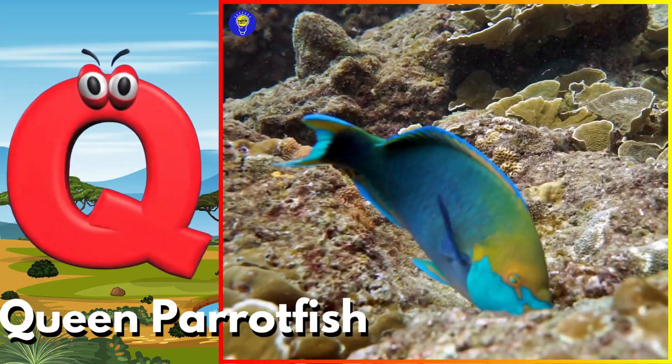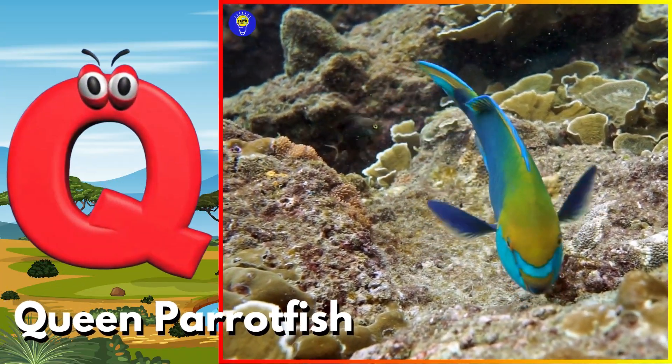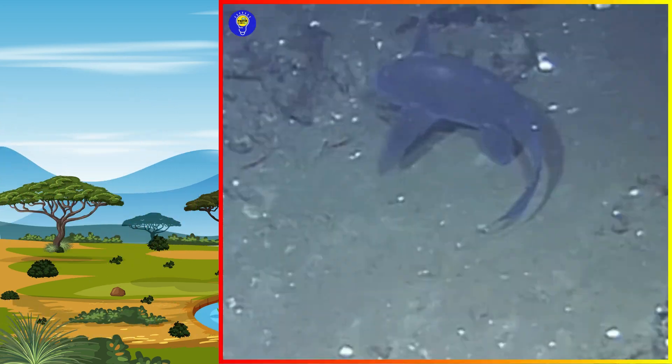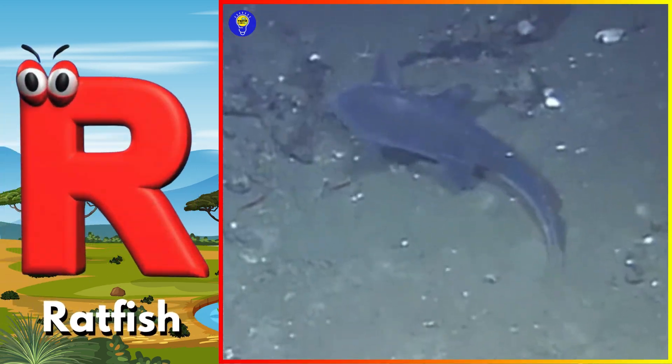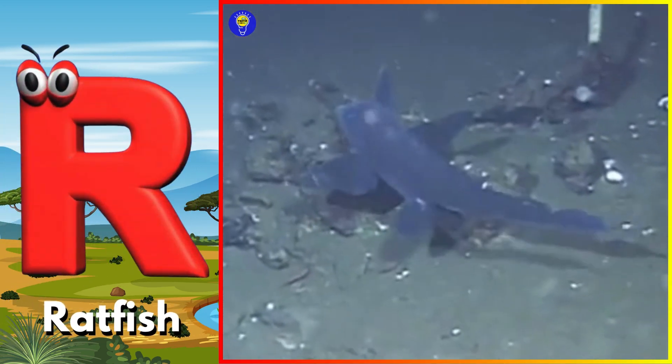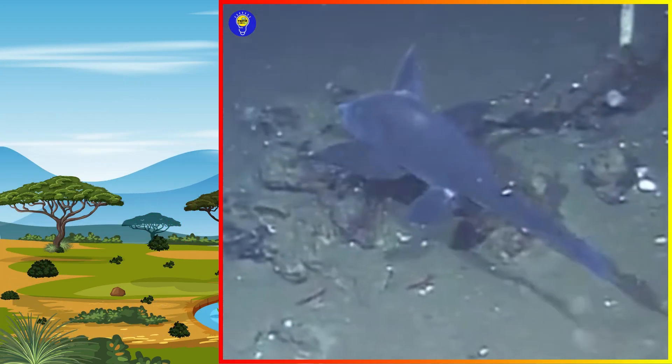Q is for queen parrotfish. Kuh, quuh, queen parrotfish. R is for ratfish. Pruh, ratfish.